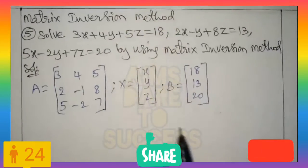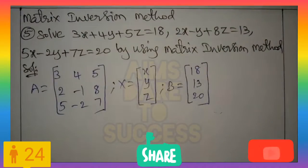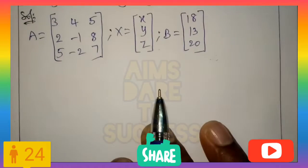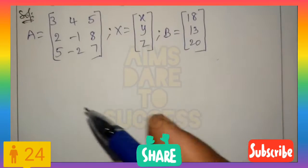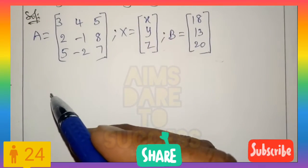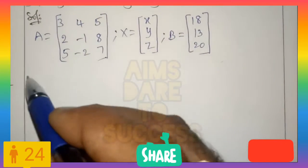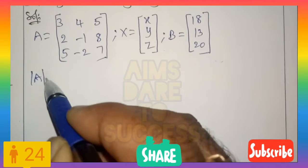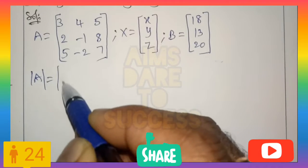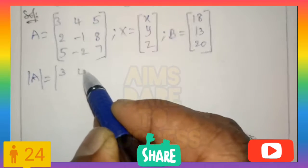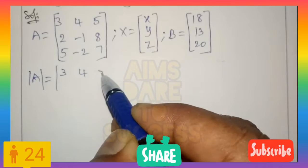After writing A, X, and B matrices, you can apply the condition that det(A) must not equal 0 — this is compulsory. If you get det(A) equal to 0, that method does not continue.